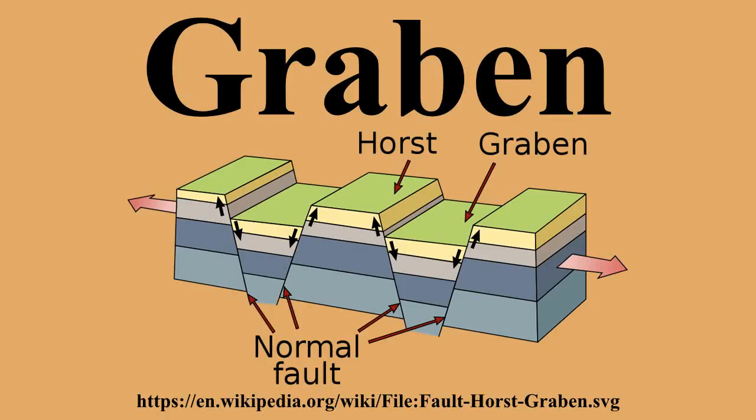Comparatively little sediment enters the half Graben across the main bounding fault due to the effects of foot wall uplift on the drainage systems. The exception is at any major offset in the bounding fault, where a relay ramp may provide an important sediment input point. Most of the sediment will enter the half Graben down the unfaulted hanging wall side.